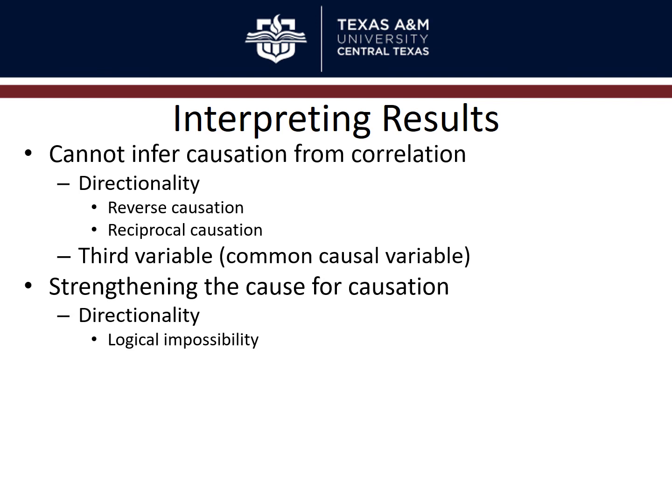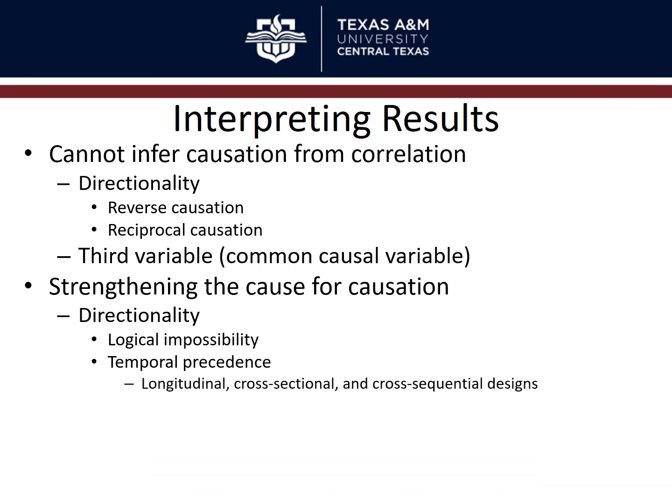Design-wise, you can establish temporal precedence — showing your predictor occurs before your criterion — using developmental designs: longitudinal, cross-sectional, or cross-sequential. In a longitudinal study, you measure variables at kindergarten, second grade, fourth grade, sixth grade, and see when things change and which came first. However, longitudinal studies are expensive and still can't fully deal with the third variable problem. A cross-sectional study gets data from kindergarteners, second graders, fourth graders, and sixth graders all at once and compares them.